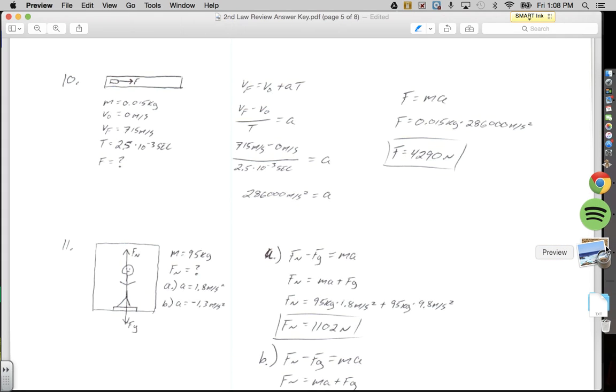All right, we're going to take a look at number 10 from the Second Law Review Sheet. In this problem, a 15 gram bullet, we've got to change that to kilograms, 0.015 kilograms, is going to be shot from a rifle. It takes 2.5 times 10 to the negative third seconds for the bullet to leave the barrel of the gun, and it exits the barrel with a speed of 715 meters per second.